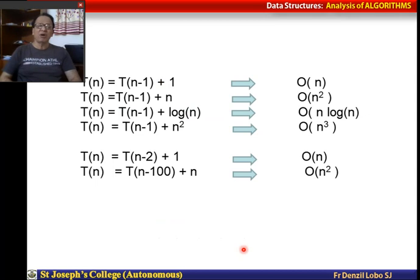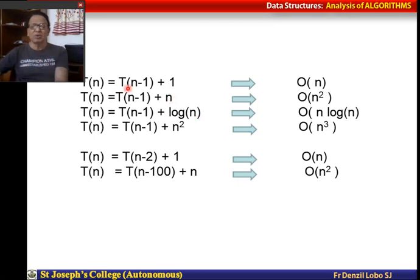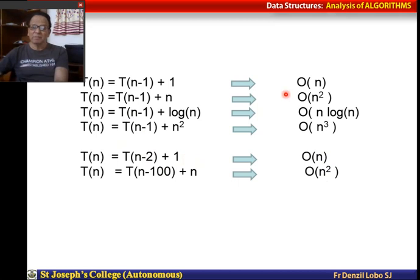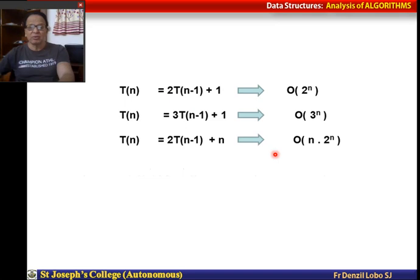Here is a summary of complexities of common recurrence formulas, useful for MCQs. T(n) = T(n-1) + 1 is O(n). If instead of 1 you have n, it becomes O(n²). With log n it is O(n log n), and with n² it is O(n³). T(n) = T(n-2) + 1 is also O(n), and T(n) = T(n-2) + n is O(n²).